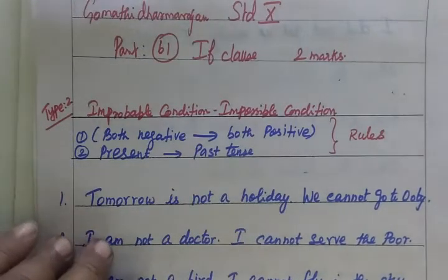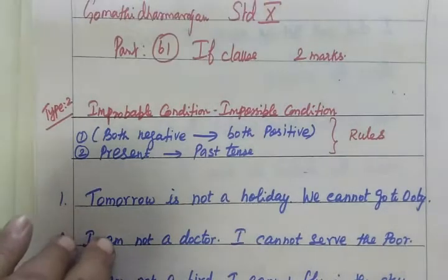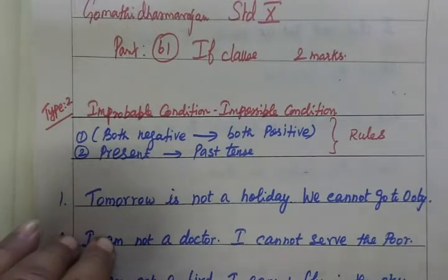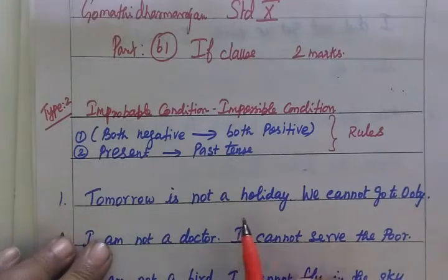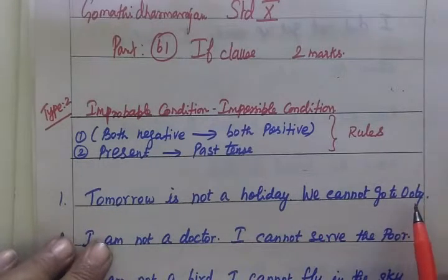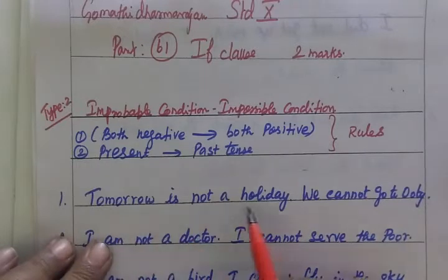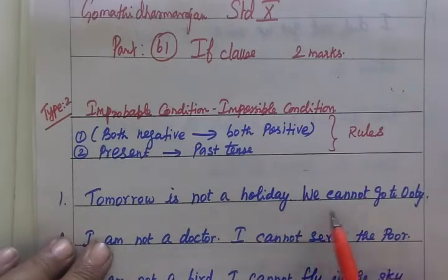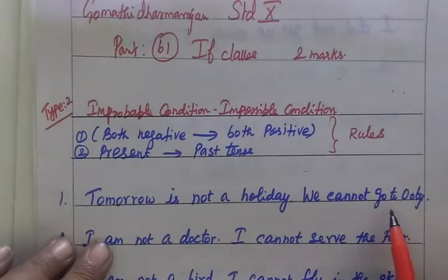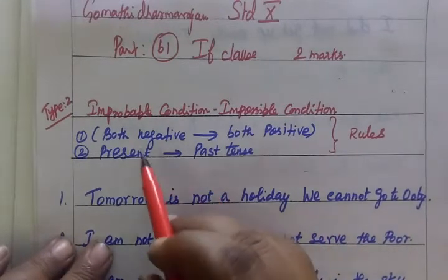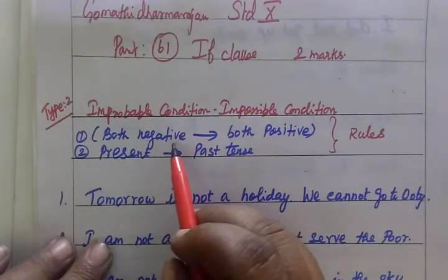This is the improbable condition — that is, the impossible condition. See the first example: Tomorrow is not a holiday, so we cannot go to Ooty. This is an impossible condition. Both clauses are negative — both negative in present tense.